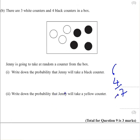Write down the probability that Jenny will take a yellow counter. There are no yellows, so the answer to that is 0. And that is question 9 done.